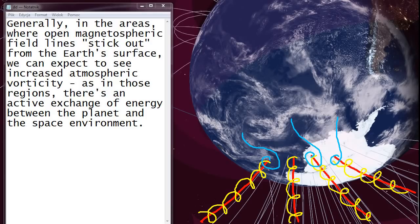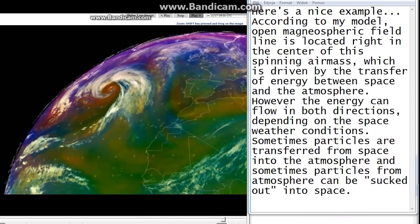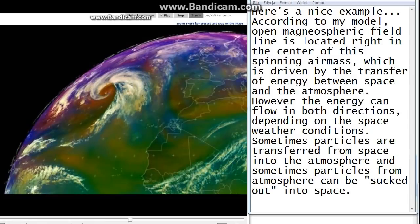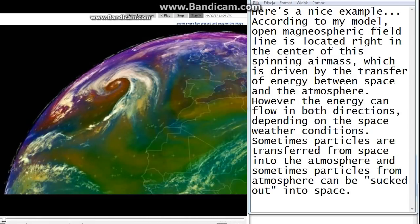Generally, in the areas where open magnetospheric field lines stick out from the Earth's surface, we can expect to see increased atmospheric vorticity, as in those regions there is an active exchange of energy between the planet and the space environment. Here is a nice example. According to my model, open magnetospheric field line is located right in the center of this spinning air mass, which is driven by the transfer of energy between space and the atmosphere.